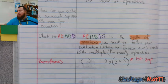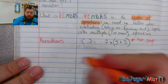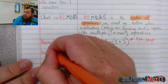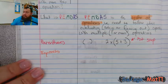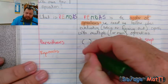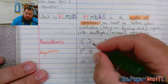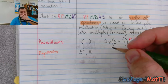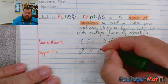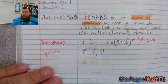Moving forward, the next thing we're going to have is exponents. After we work the parentheses, we go ahead and work exponents. An example of an exponent would be five to the second power, ten to the first power, or three to the third power. Exponents are our second step.